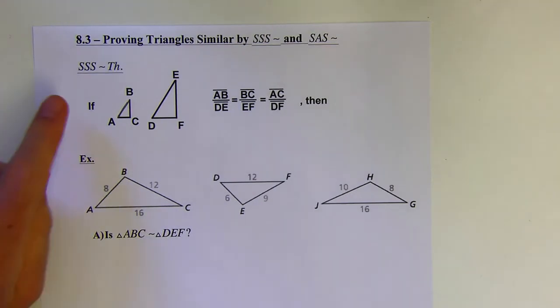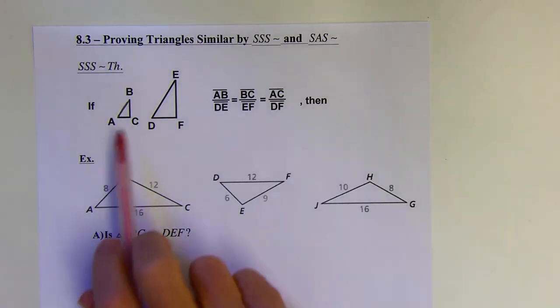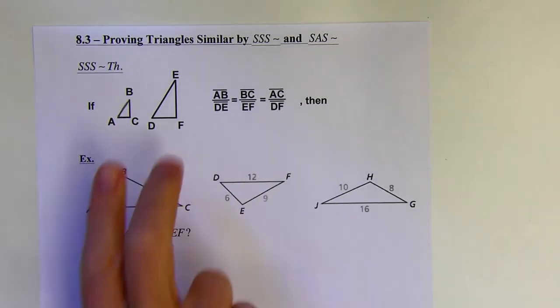When we had side-side-side congruency theorems, that meant that if three sides of a triangle are congruent to three sides in another triangle, then the triangles are congruent. But this is different. My sides are not going to be congruent in these two triangles.